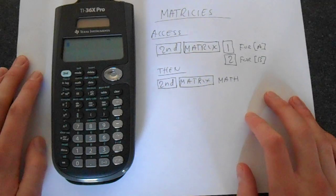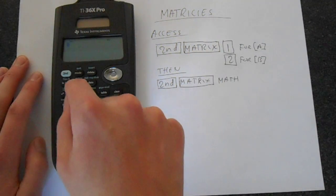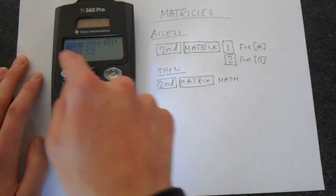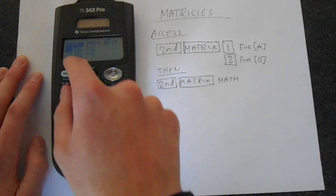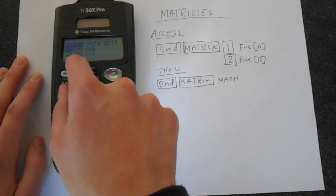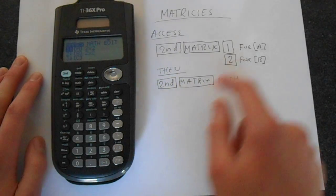So we can access these matrices by going to second function matrix and we want 1 for matrix A which is our 2 by 2 and 2 lets us access matrix B which is our 2 by 2 as well.